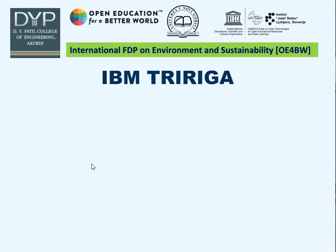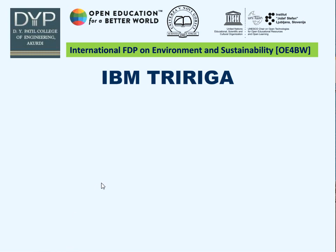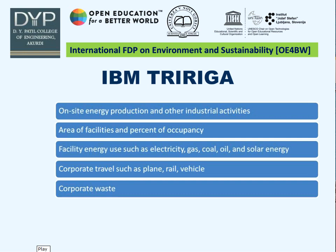The IBM TriRiga tool incorporates different types of information for predicting carbon footprint. These include: on-site energy production and other industrial activity data; area, facilities, and percentage of occupancy; facility energy such as gas, electricity, coal, oil, and solar; corporate travel by bus, plane, rail, or any vehicle; and how corporate waste is treated. All of this is taken into consideration for calculating the carbon footprint using the IBM TriRiga tool.